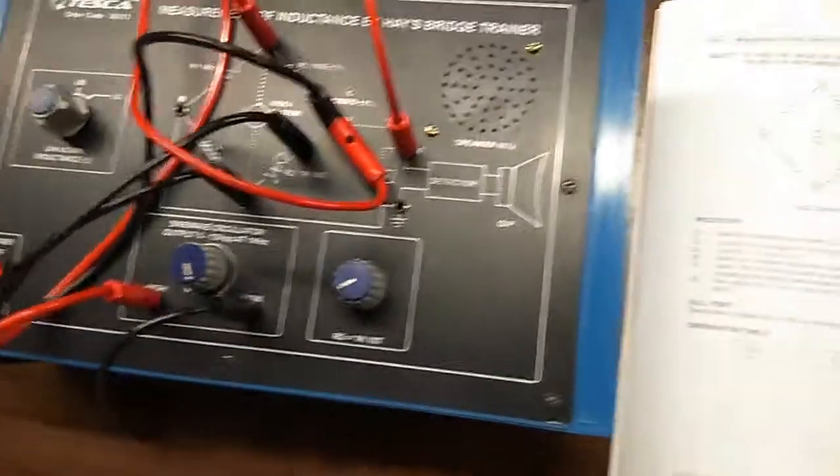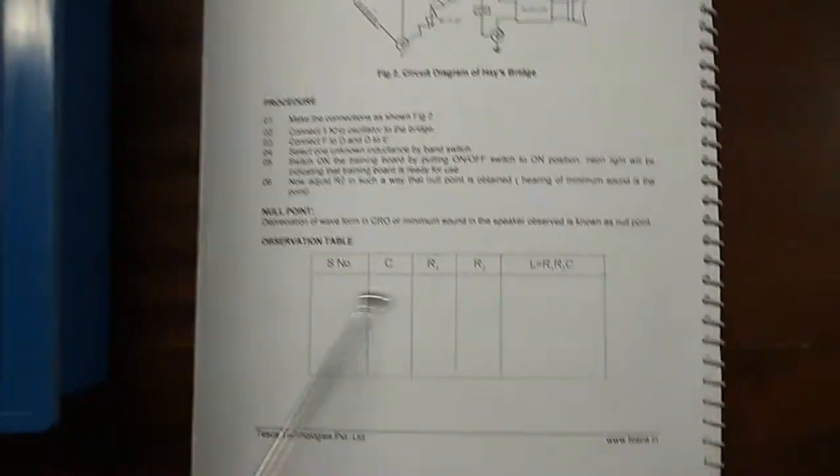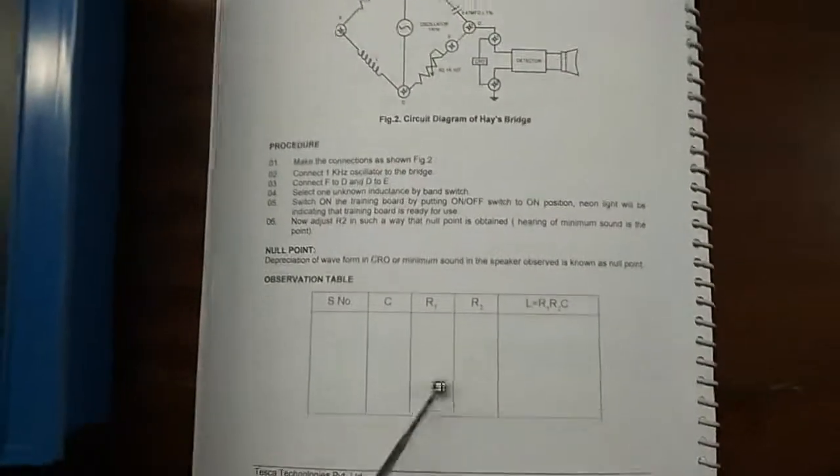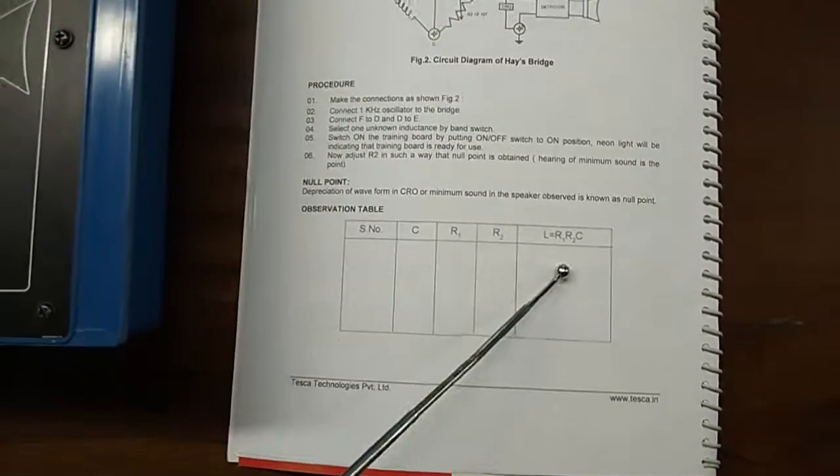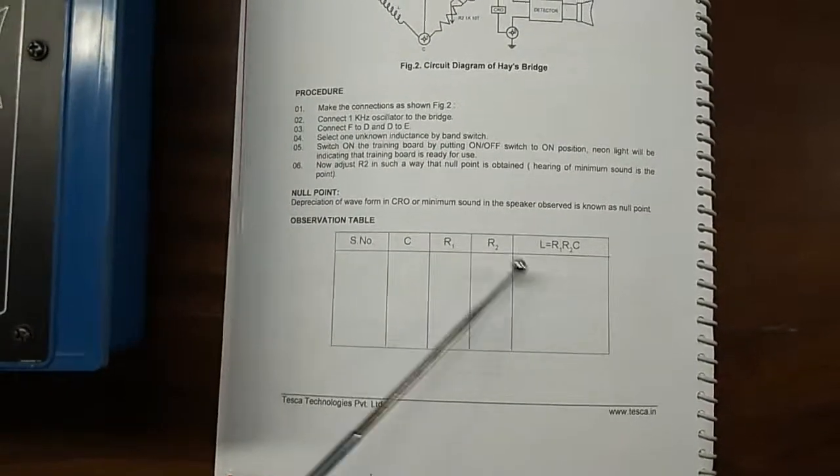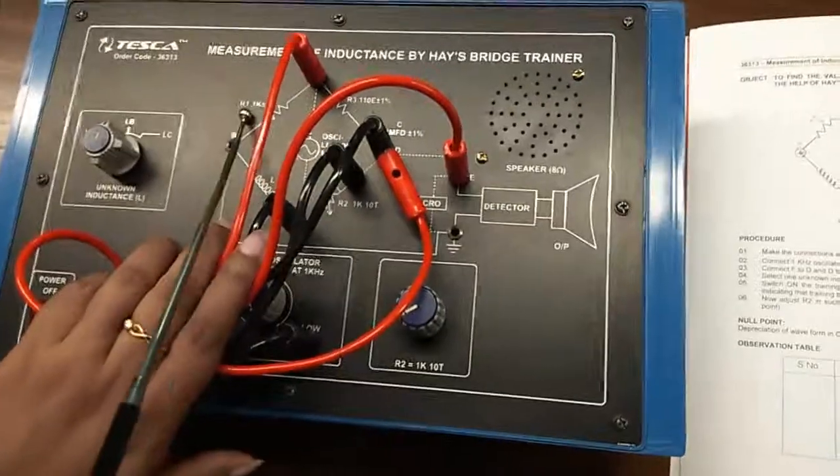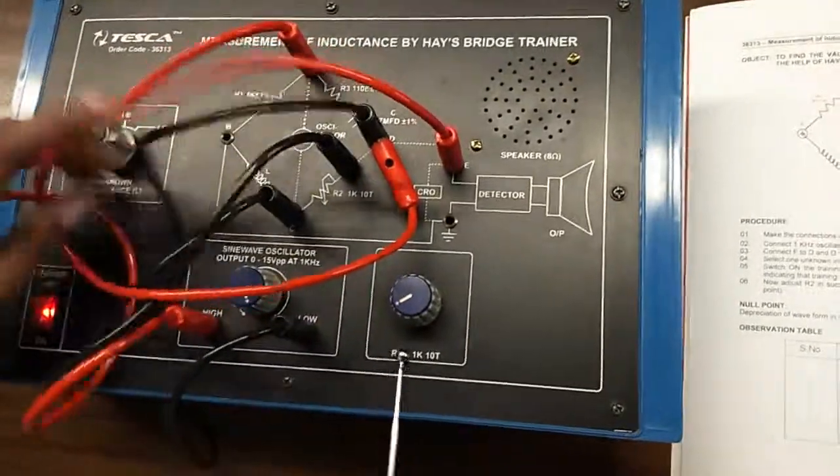Using this, note down the value of C, R1, R2, and here the formula is given to find the unknown value of inductance, that is L equals to R1 R2 into C. See, this is R1 and this is R2.